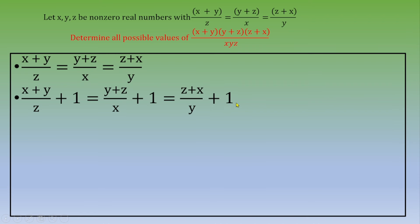Now you end up with (x+y+z)/z = (x+y+z)/x = (x+y+z)/y. We're going to keep this.